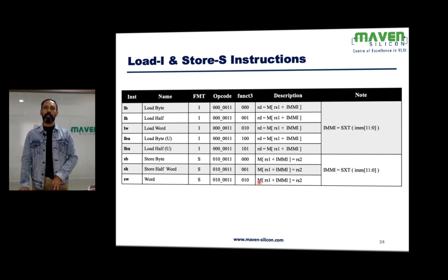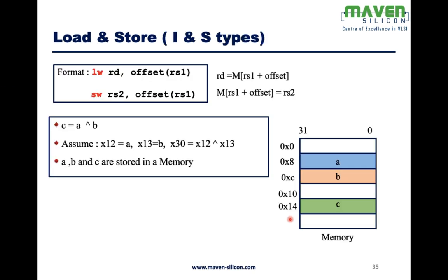For store instructions, there are similarly different formats: store byte, store half-word, or store word. Whatever value we have in a register will be stored into memory. The address is also RS1 plus offset. For store word, the format is: store word RS2, offset, RS1 — so the value of RS2 is stored at the calculated memory address.